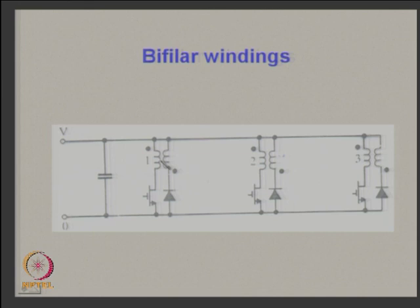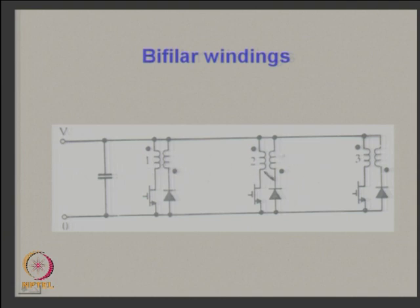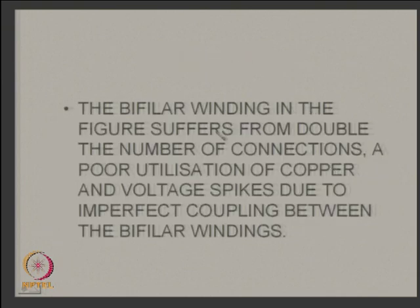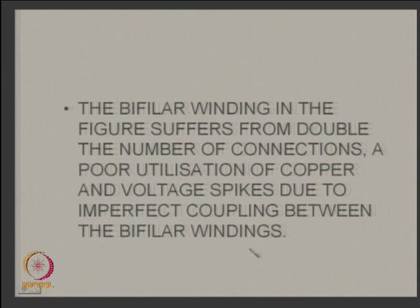The bifilar winding approach splits one winding into two parts, like a center tap. For forward rotation one set is used, for backward rotation the other set is used. Phase 1, 2, and 3 each have two segments coupled in opposite directions. However, bifilar windings suffer from double the number of connections, poor utilization of copper, and voltage spikes due to imperfect coupling between the bifilar winding halves.